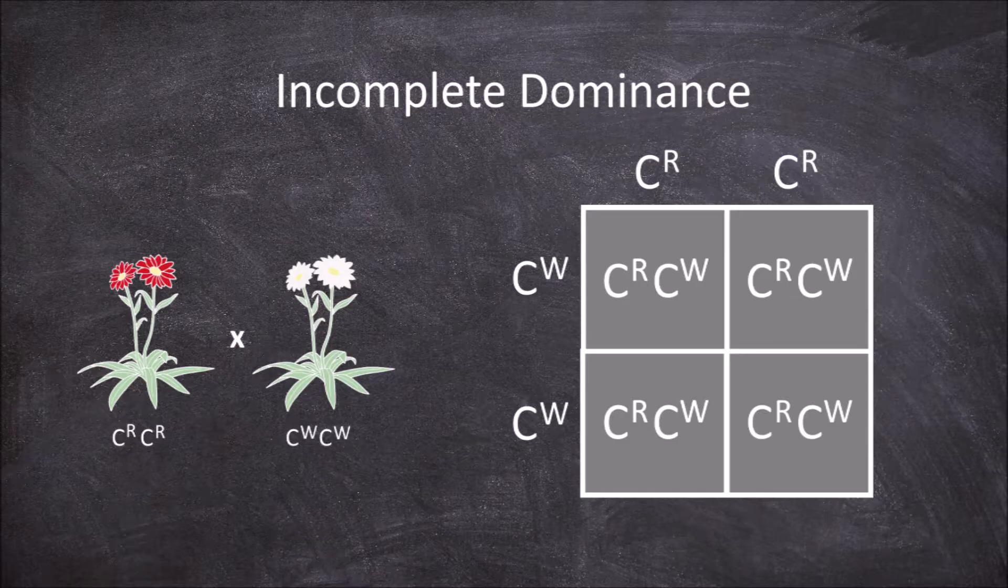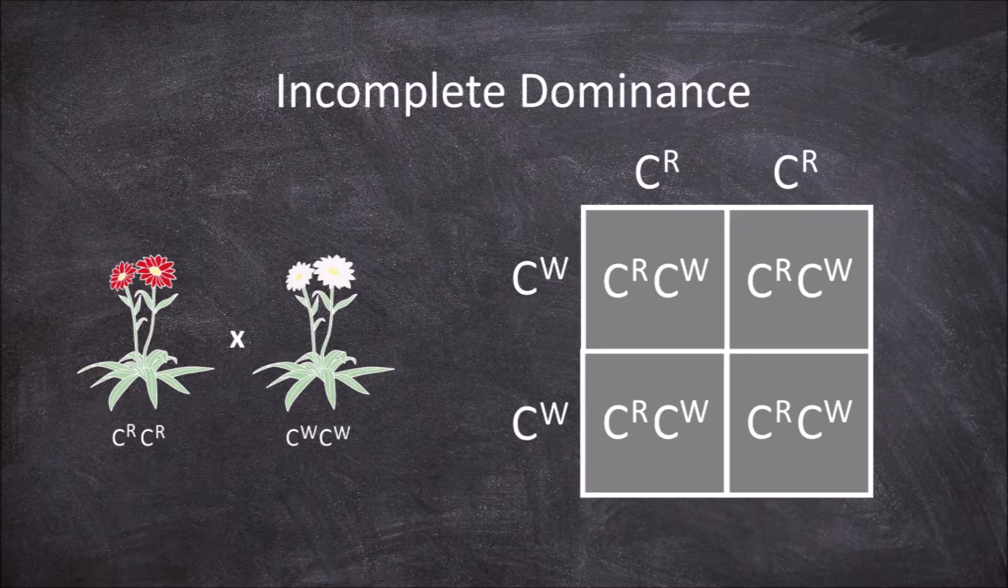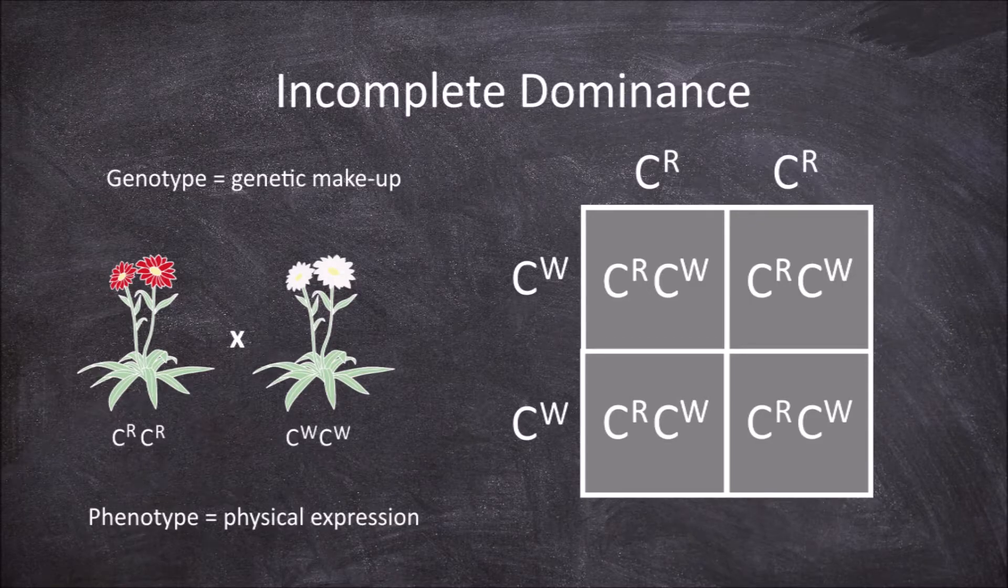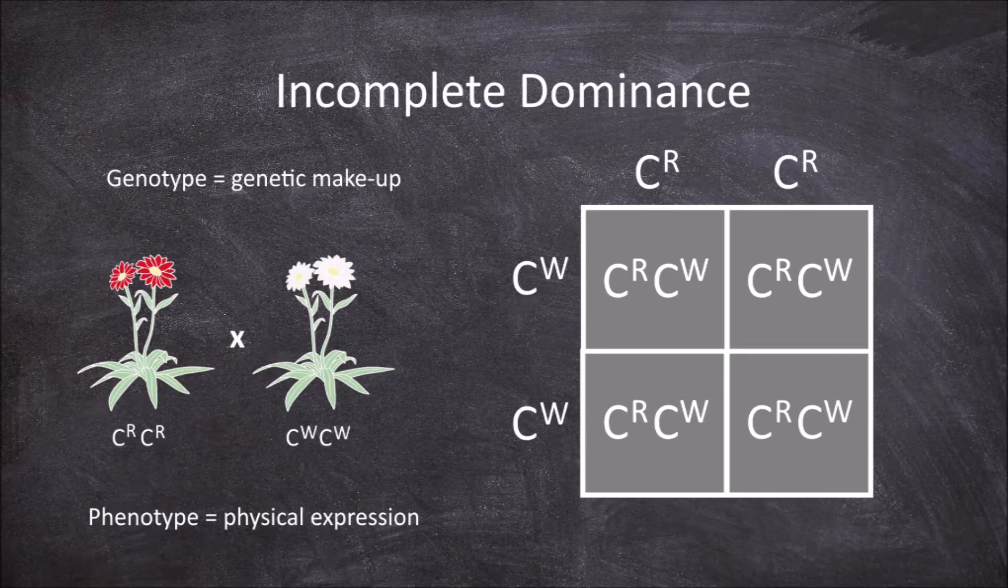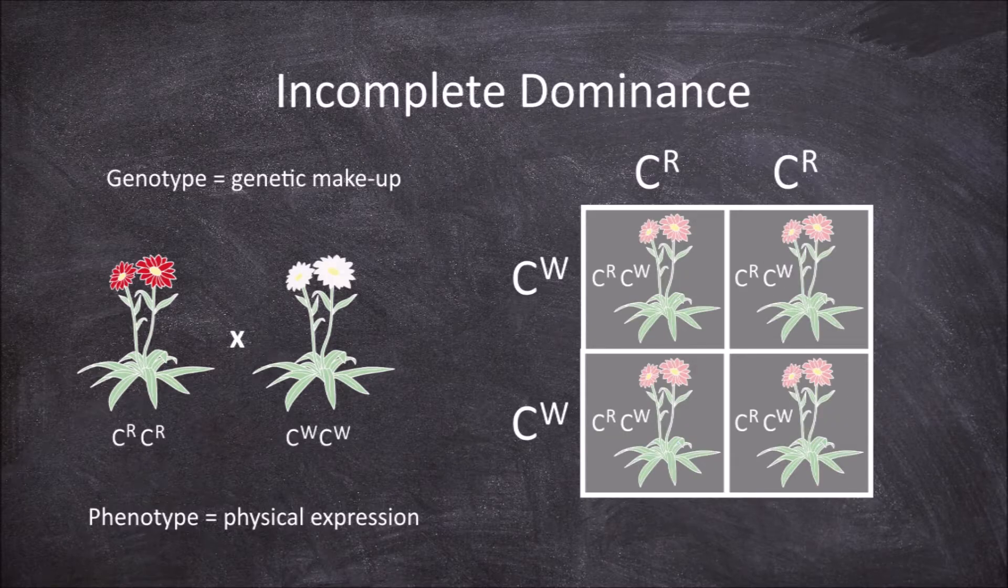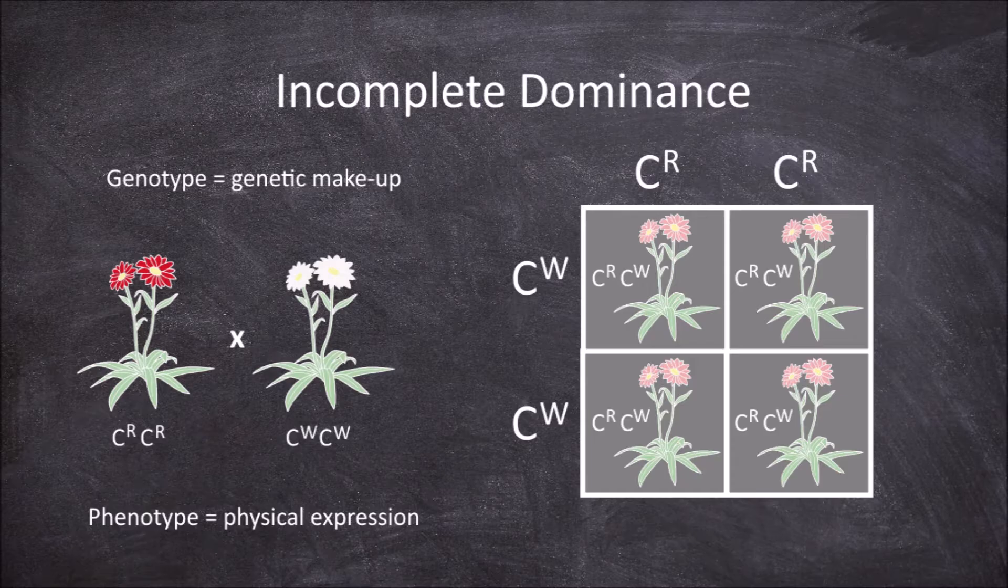All offspring in this cross are heterozygous C^R C^W. This is the genotype, but what is the phenotype of a heterozygous plant when the alleles are incompletely dominant? These individuals express an intermediate form of both variants of this trait.